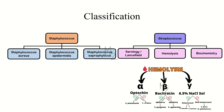On the other hand, streptococcus bacteria are further classified based on serology — the Lancefield classification — and also on the basis of hemolysis and biochemistry. On the basis of hemolysis, streptococcus bacteria are classified into alpha hemolytic, beta hemolytic, and gamma hemolytic bacteria.